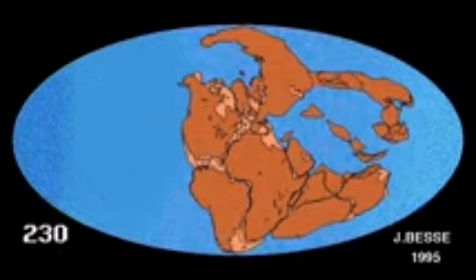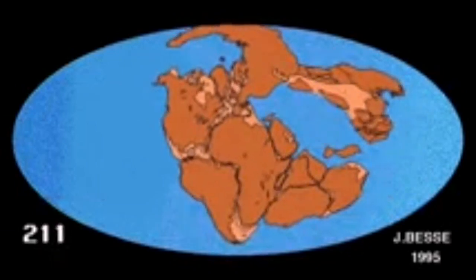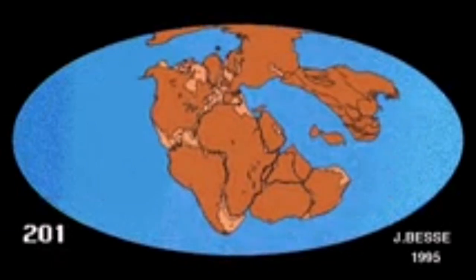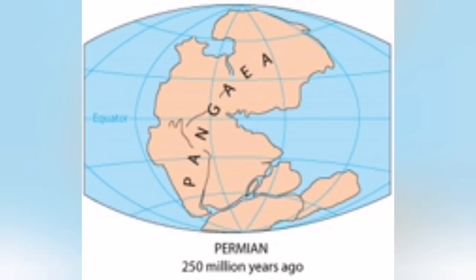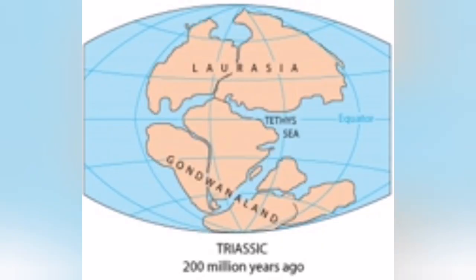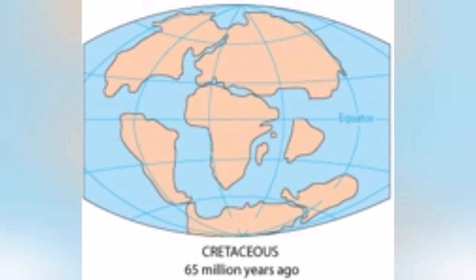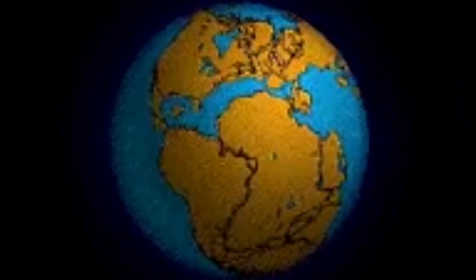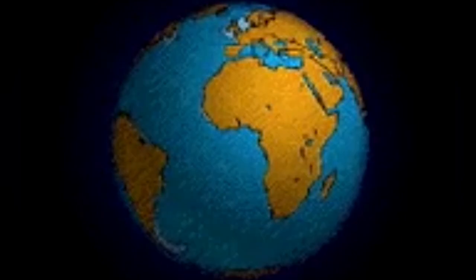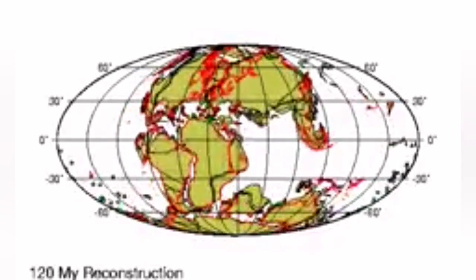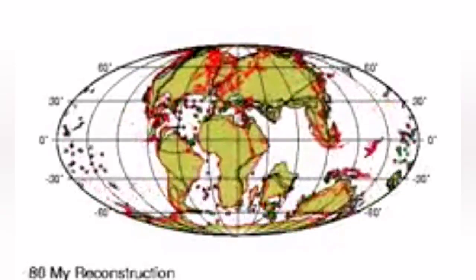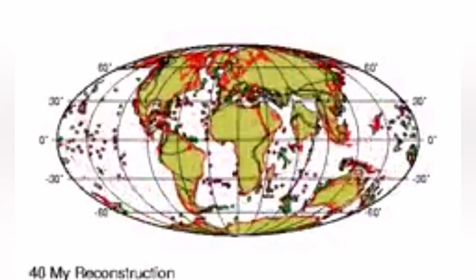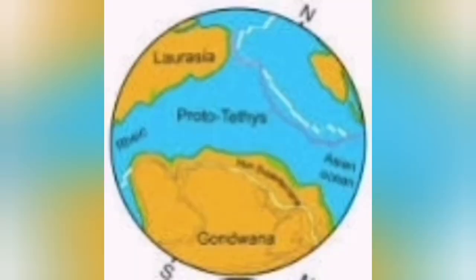One of the most famous oceans is the Tethys Ocean, the remnants of which are the Persian Gulf, Caspian Sea, Black Sea, and the Mediterranean Sea. The creation and closure of this ocean is the subject of this video.